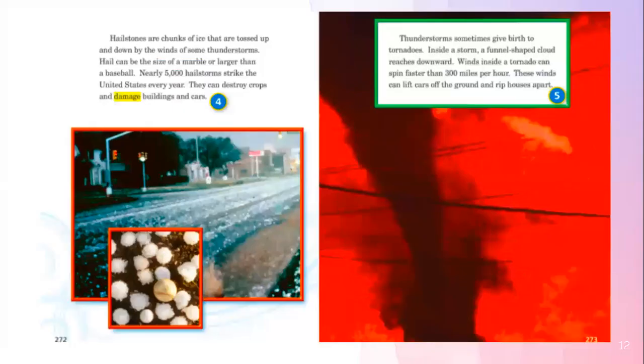Hailstones are chunks of ice that are tossed up and down by the winds of some thunderstorms. Hail can be the size of a marble or larger than a baseball. Nearly 5,000 hailstorms strike the United States every year. They can destroy crops and damage buildings and cars.